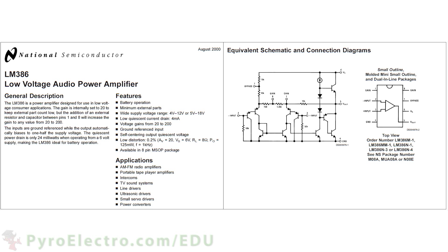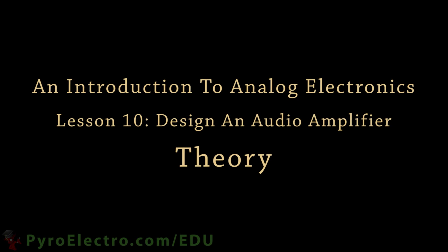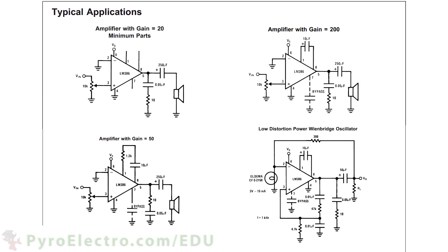Inside the datasheet of this IC, we can see a clear explanation of all features and intended applications, as well as a high-level circuit diagram of what is inside the IC. The most important part of the LM386 datasheet is the typical applications section. Most datasheets will have this section, and it is very important because it gives examples of how to use the IC.